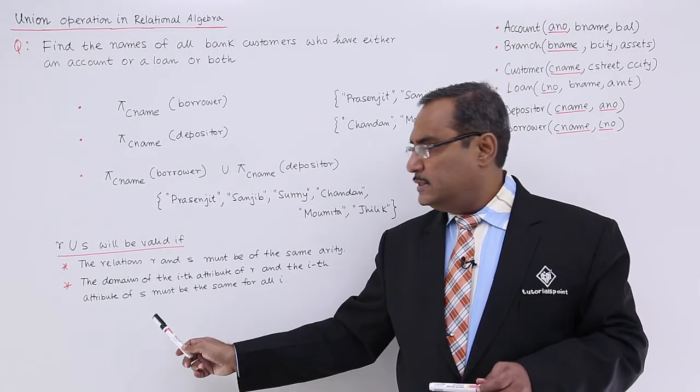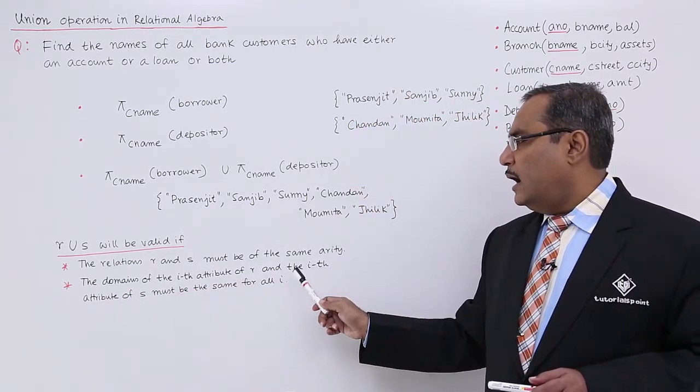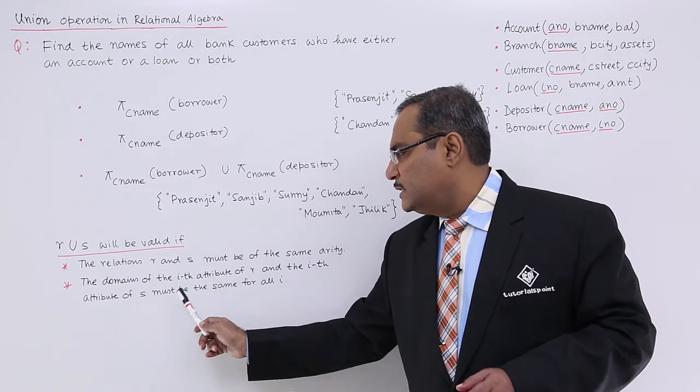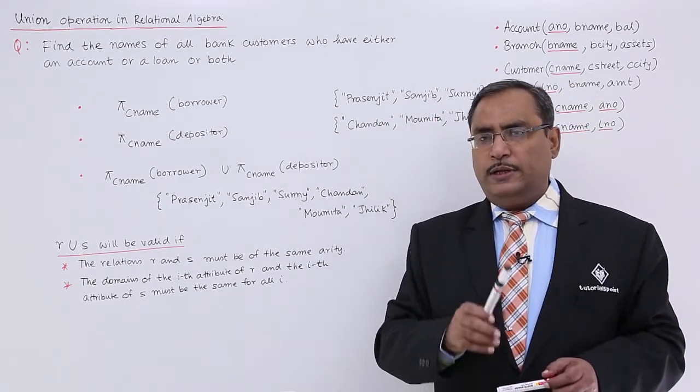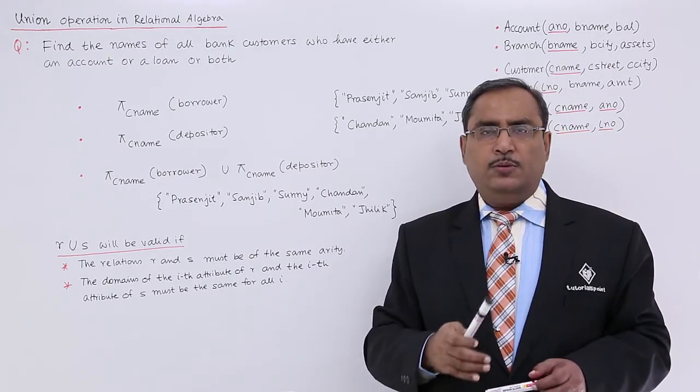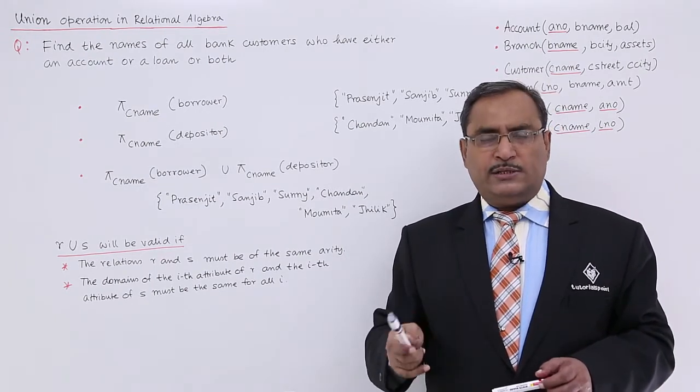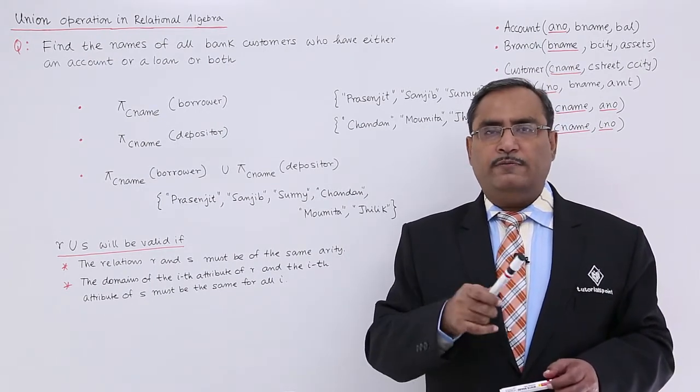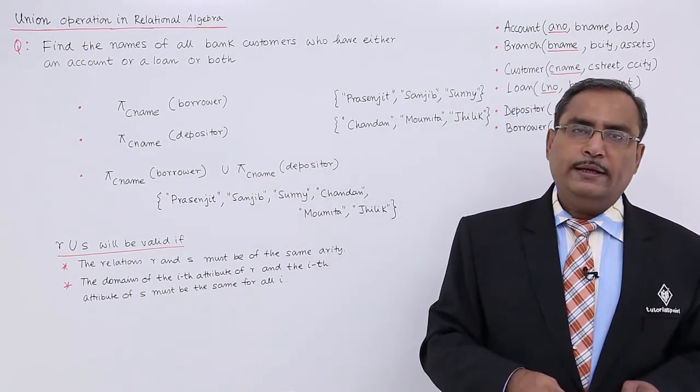The second condition tells that the domains of the i-th attribute of R and the i-th attribute of S must be the same for all i. That means if the first attribute is having domain, say, varchar or say string, the second attribute is having domain integer, then also S will have the first attribute with the domain varchar or string and the second attribute must be of the domain integer type. So then only the union operation can be performed.